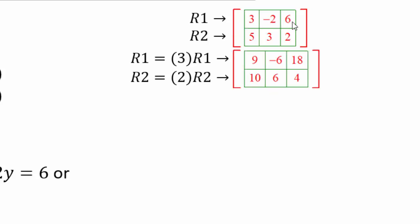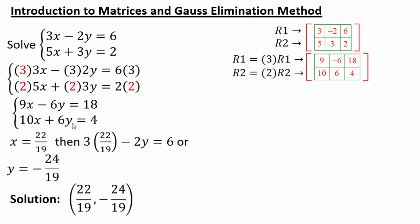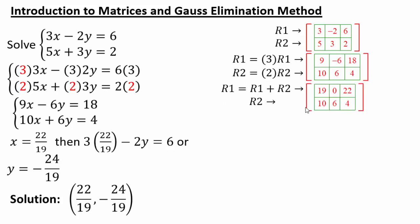The top row got multiplied by 3, the second row got multiplied by 2, and these are your new coefficients — an equivalent system of equations. What did you do next? Since the negative 6y and 6y were lined up, we could add them and create a new equation. So I can say row 1 becomes row 1 plus row 2; that's the new row 1, and row 2 remains unchanged. By adding row 2 to row 1, I got a 0 for the y coordinate, which allows me to say 19x equals 22. So if I divide the top row by 19, I get my x coordinate: 22 over 19.